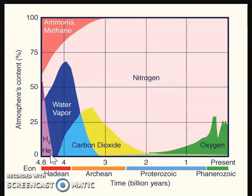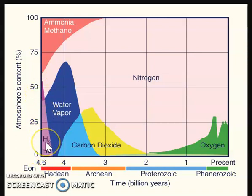Two of the main gases in the entire universe are helium and hydrogen, and these are fairly abundant in the first atmosphere. But those gases are very light, and because the Earth doesn't have a super strong gravitational pull and because of the heat involved in the early Earth, it's hypothesized that most of these gases quickly boiled off into space.